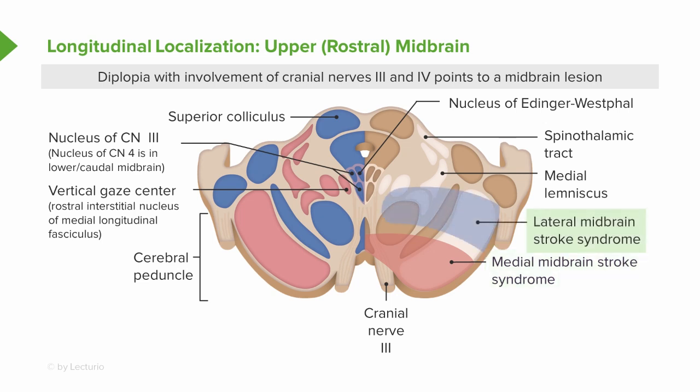The second presentation is a lateral midbrain stroke. There we often don't see cranial nerve three palsies, but we do see problems with the anterolateral system and the medial lemniscus, in addition to varying degrees of weakness. Involvement of the cerebral peduncles, the anterolateral system, and the medial lemniscus produces hemisensory loss, motor weakness, and loss of pain, temperature, vibration, and proprioception fibers.